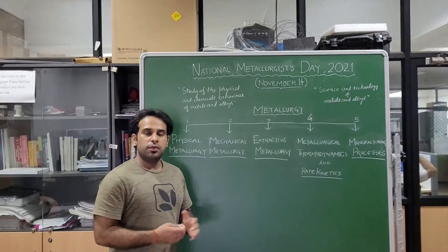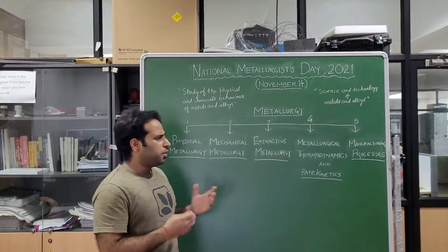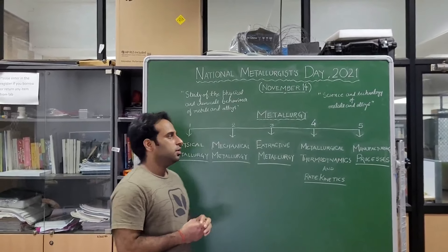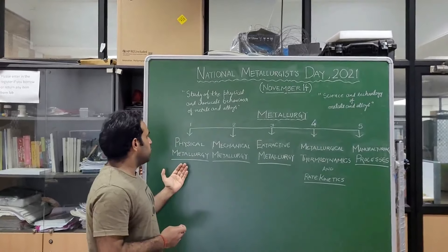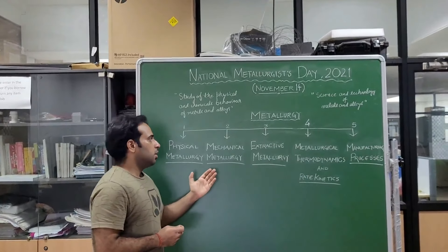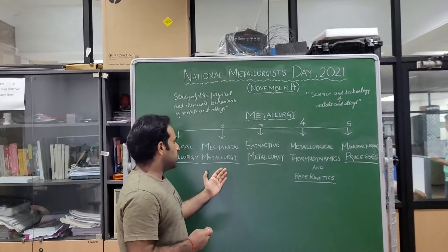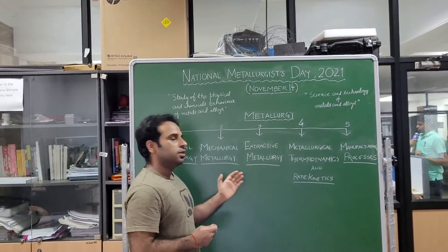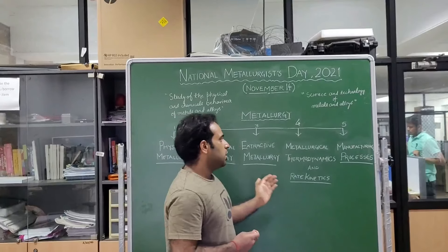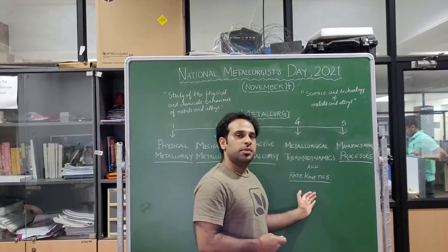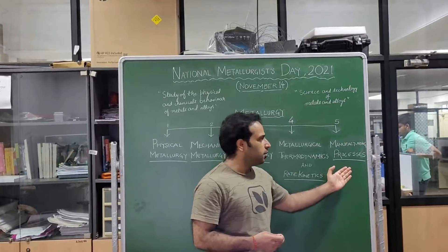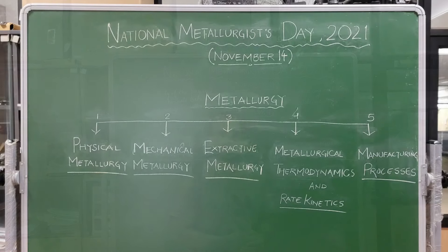Now we will understand in brief the different classifications of metallurgy. The first classification is physical metallurgy, another one is mechanical metallurgy, the third one is extractive metallurgy, the fourth one is metallurgical thermodynamics and rate kinetics, and the final one is manufacturing processes.